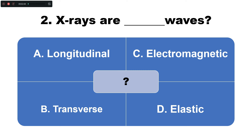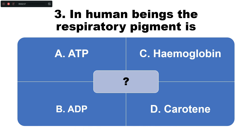Question number two: X-rays are what type of waves? Option A: longitudinal, B: transverse, C: electromagnetic, D: elastic. The correct answer is option C — X-rays are electromagnetic waves.